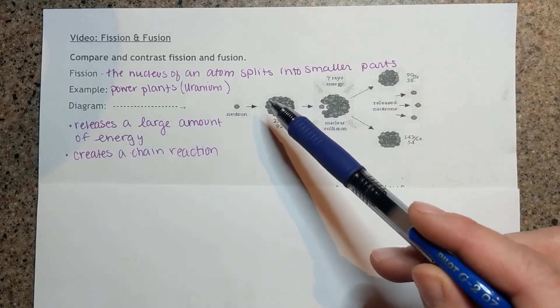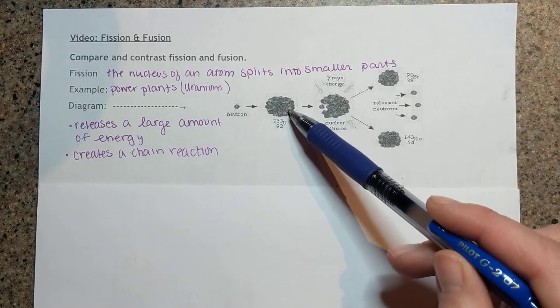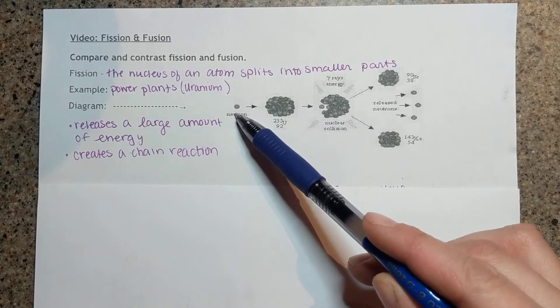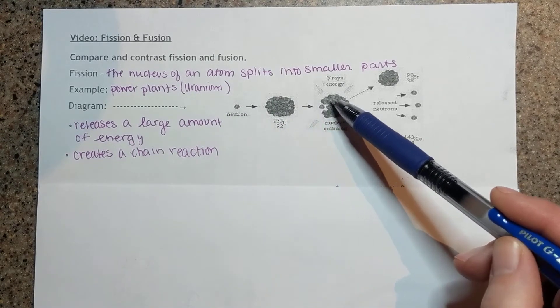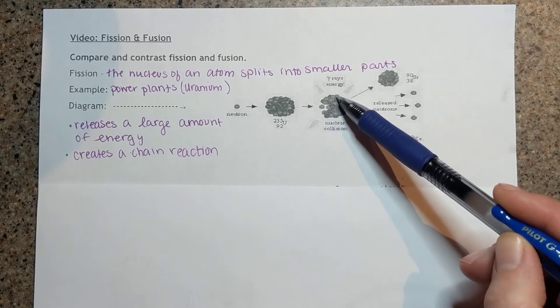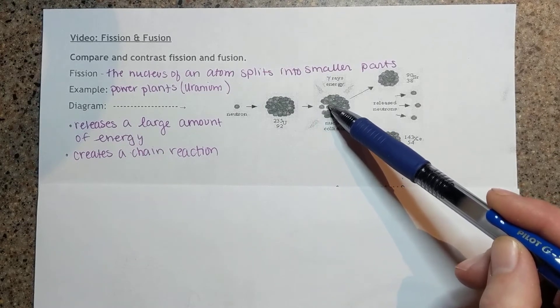Here we have a uranium-235 nucleus and it gets hit by a neutron. When the neutron hits my uranium-235 nucleus we see a malformation. So we have our impact.